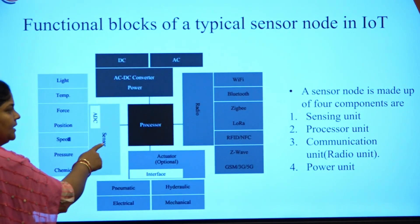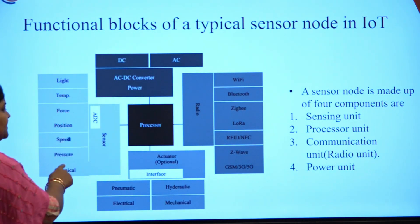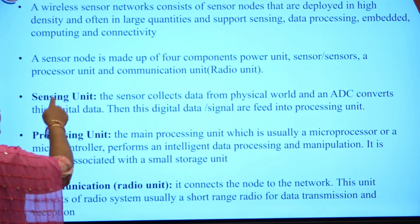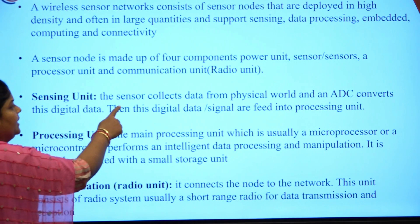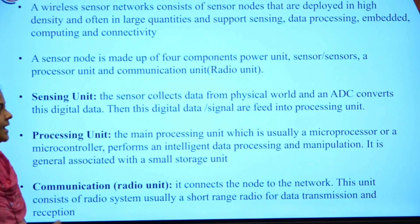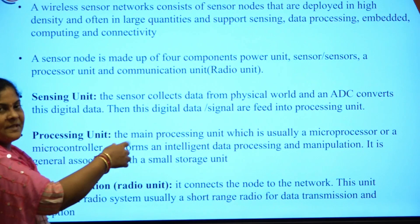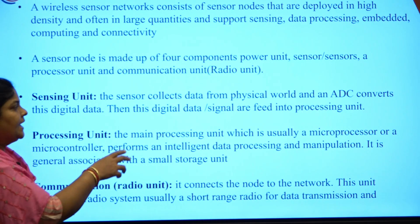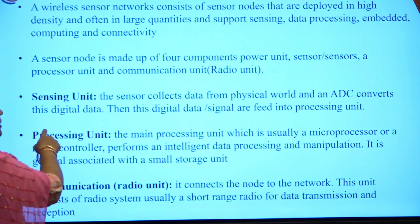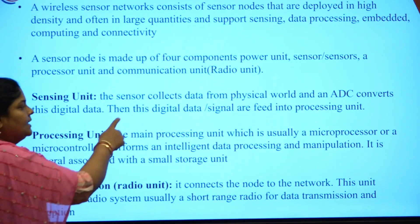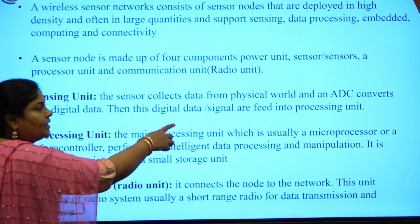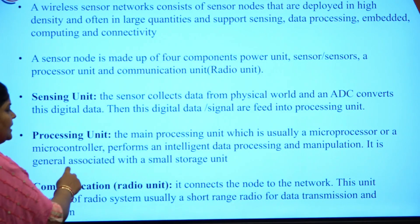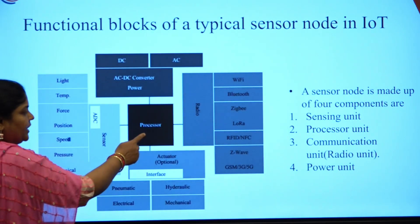The sensing unit consists of different types of sensors and an ADC. The sensor collects data from the physical world, and the ADC converts the analog data into digital data. This digital data is then fed to the next block, the processing unit.